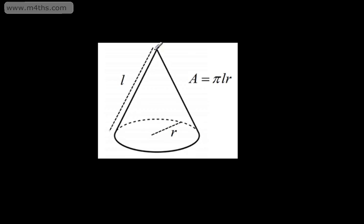In later examples, we will look at that, but for now we will focus on the curved surface area. If we have a cone with a base radius r and a slant height of l, the area is given as pi lr or pi rl — pi multiplied by l, the slant height, multiplied by the radius. It isn't the perpendicular height; we used the perpendicular height when we were finding the volume.